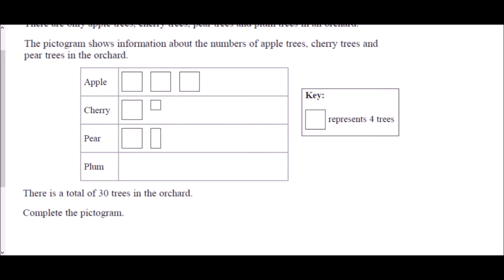And so for apple we know there are four, four, four. And so four, four and four means twelve apple trees. For cherry we know there is four, and then we've only got a quarter of a square here. So that must be one extra. So four and one is five. For the pear tree, well we know there are four, and then we've got half a diagram. Well that must mean two. And so that's six in total.